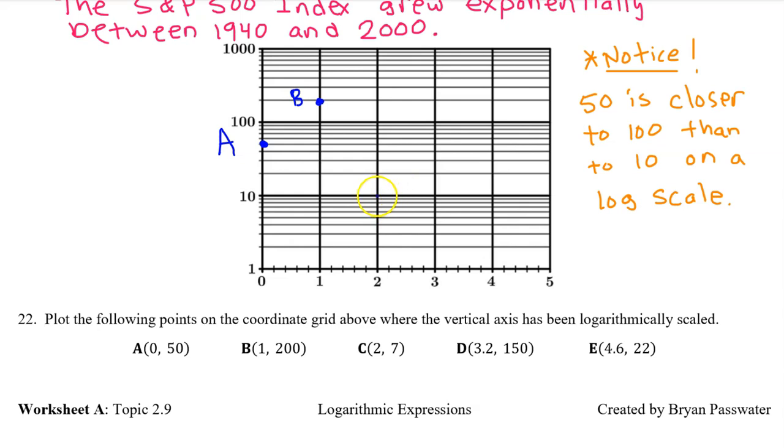How about 2, 7? That's less than 10. So we are counting by ones. However, notice that we are starting from 1 on the bottom line. So 2 is the first mark right here. So this is C.